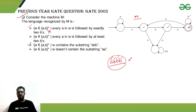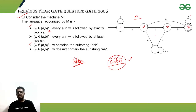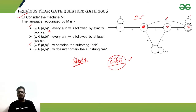Option C says: w contains a substring 'abb'. This is also false. Consider the string 'abba' — it contains 'abb' as a substring. Tracing: on 'a' we go to a state, on first 'b' to another, on second 'b' we reach the final state, but on the last 'a' we come back to a non-final state, so 'abba' is rejected. Despite satisfying the substring condition, it's rejected — so option C is incorrect.